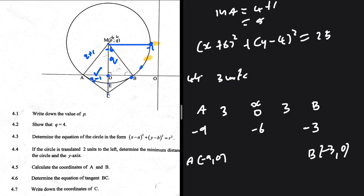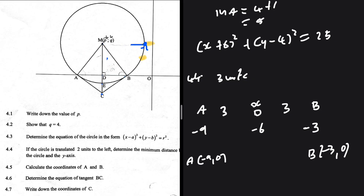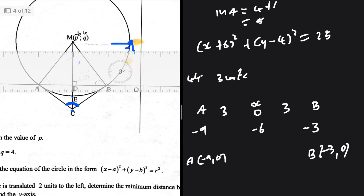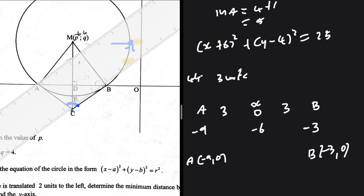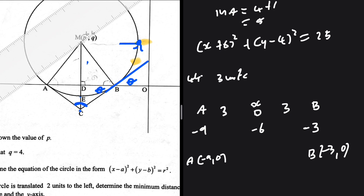4.6 and 4.7: Determine the equation of tangent BC, then write down the coordinates of C, and calculate the size of angle ACB. These are fairly straightforward. We find the equation of tangent BC, and from that we can calculate the coordinates of C. For the angle ACB, one approach is to extend line BC and find angle theta using the gradient of that line — the angle of inclination. Vertically opposite angles means that same angle theta appears on the other side.